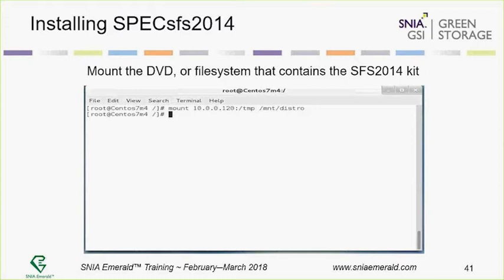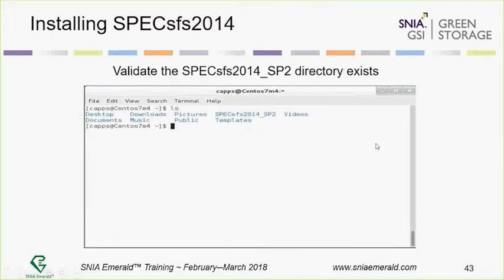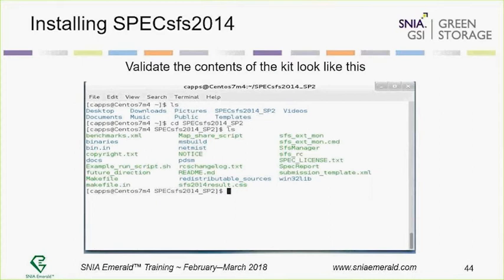So I mount a copy over NFS, CD into where I mounted it, and copy recursively everything from the distribution to wherever I want to install it — in this case, my current working directory. When done, you do an ls and should see the new directory: specSFS2014_SP2. If you CD into it and look around, you'll see all the files with proper uppercase and lowercase. If everything is mapped to all upper or all lower, don't even bother trying to run it — get that straightened out first.